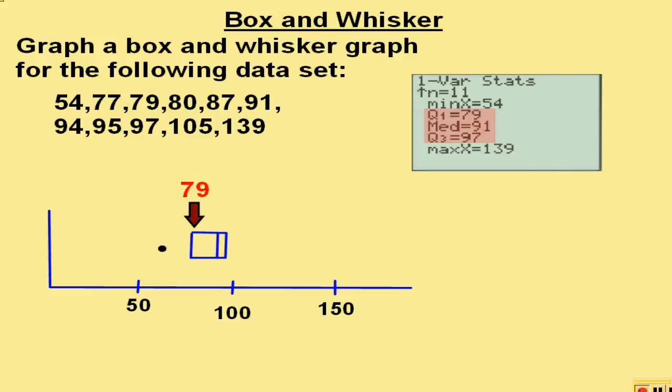The left side of the box is 79, which is approximately 79 on the scale. The segment inside the box is the median, and it's 91. And the right side of the box is 97, or the third quartile.